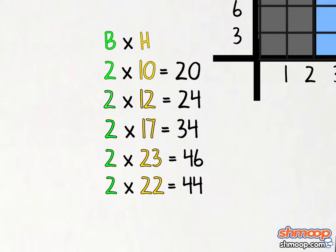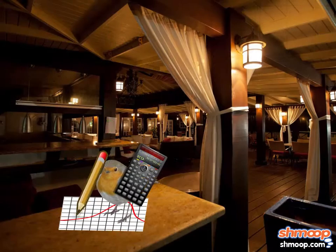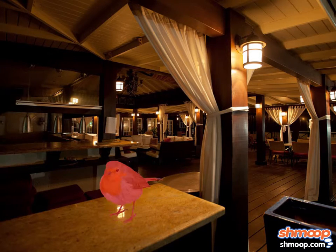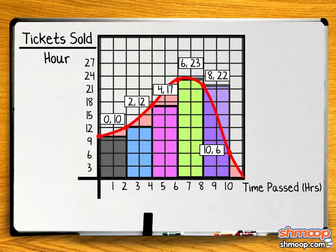Adding these up, we find that the total area is approximately twenty plus twenty-four plus thirty-four plus forty-six plus forty-four, or a hundred sixty-eight. But for people like Mr. Robin, an approximation isn't good enough. Even if the overestimations and underestimations roughly cancel each other out, the approximation still isn't exact.